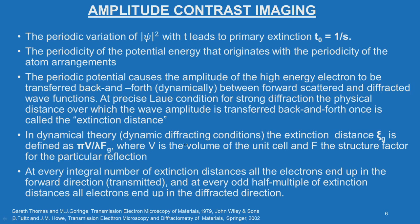In dynamical theory, the extinction distance ξg is defined as πV / (λFg), where V is the volume of the unit cell and F is the structure factor for the particular reflection. At every integral number of extinction distances, all electrons end up in the transmitted direction; at every odd half-multiple of extinction distances, all electrons end up in the diffracted direction.